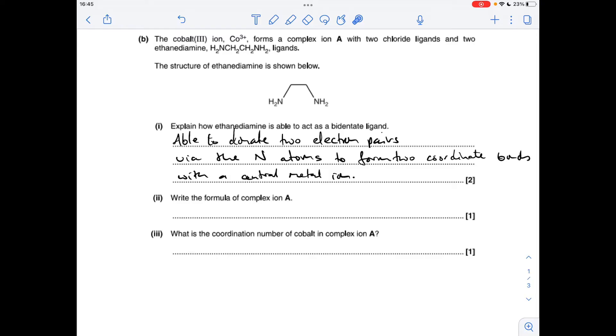Formula of complex ion A: it's made from Co3+, two chloride ligands, and two of these ligands as well. It's got a one plus charge because the cobalt is three plus, these are neutral, and these are one minus each.